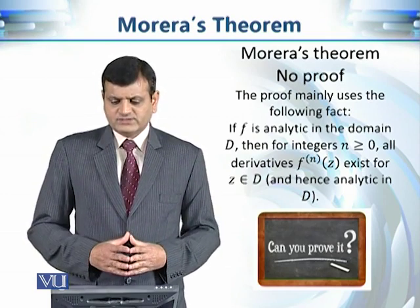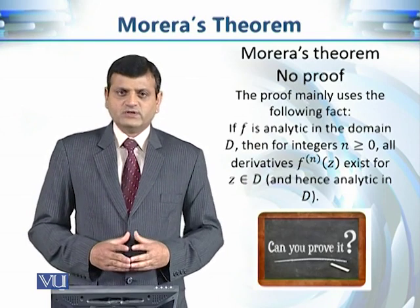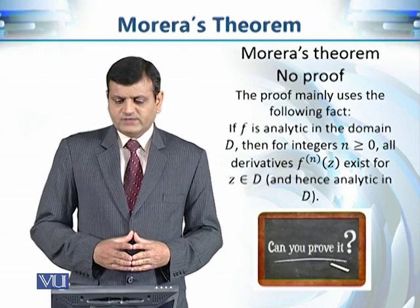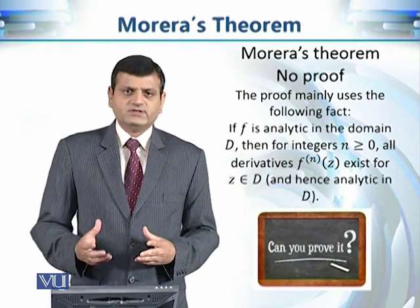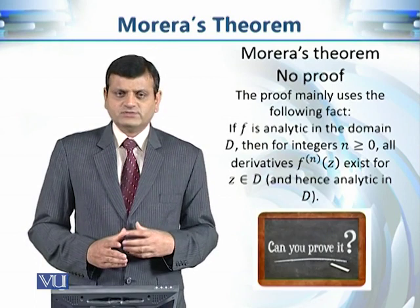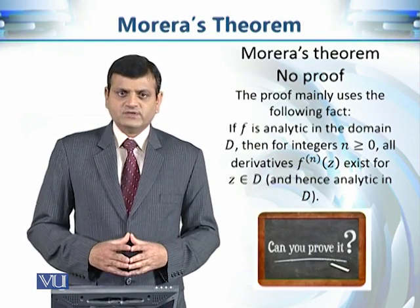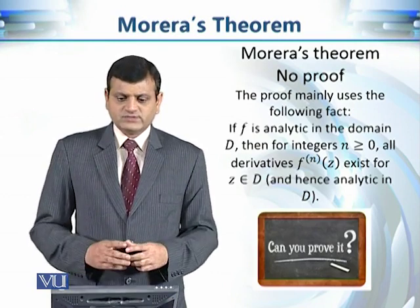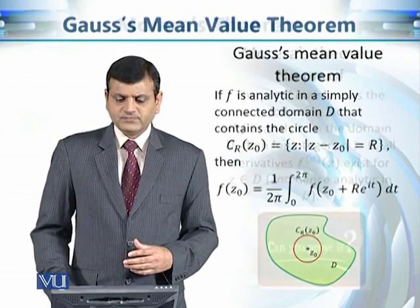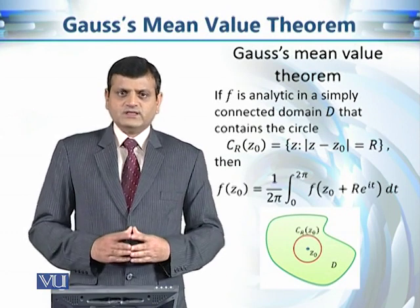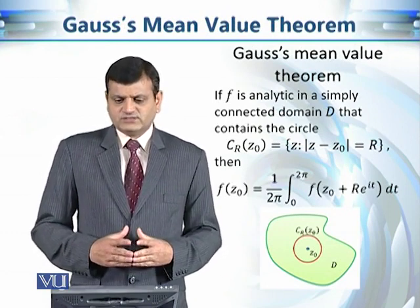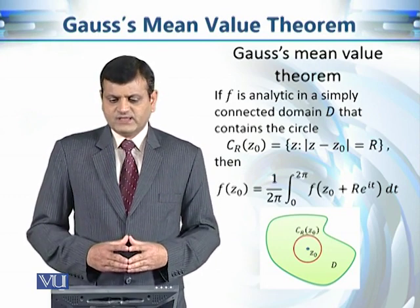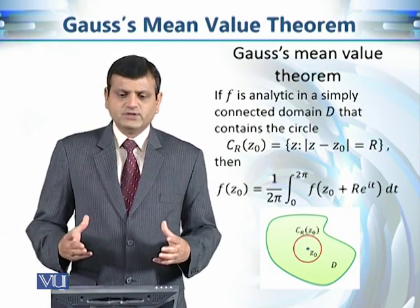We are going to use a consequence of Cauchy's integral formula for derivatives, namely: if a function f is analytic, then its derivatives are also analytic. This is a consequence discussed in our previous module, and we use it in the proof of Morera's theorem. Moving on to the second and last consequence in this module, this is Gauss's mean value theorem.